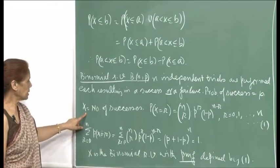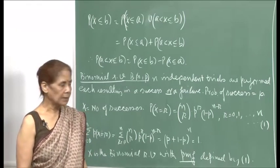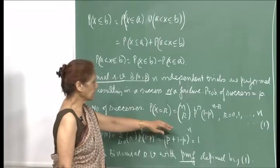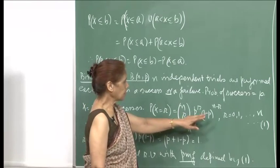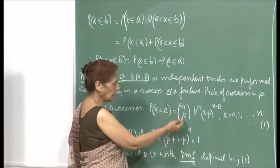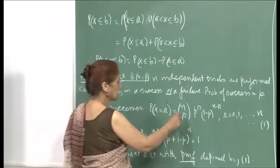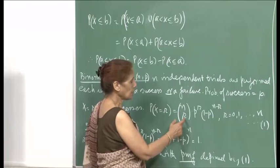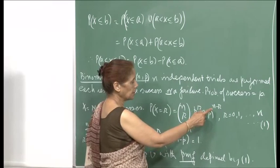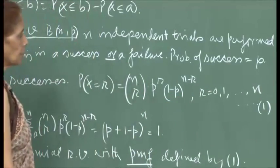The random variable X denotes the number of successes in n trials. The probability that X equals r is given by nCr · p^r · (1−p)^(n−r), for r = 0, 1, ..., n. For r successes in n trials, those r successes can be any of the n trials — hence nCr — times p^r for the r successes and (1−p)^(n−r) for the n−r failures.